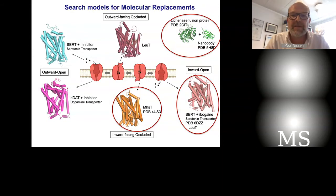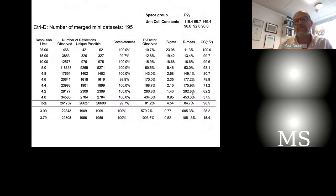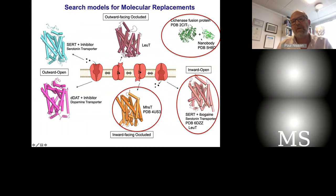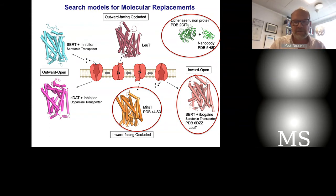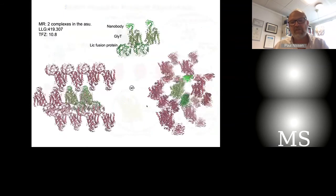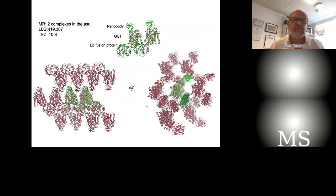Moving on from such a dataset at 4-ångström resolution, it seemed possible to start looking at molecular replacement solutions. For search models we had the fusion protein construct — the endolichenase fusion protein construct — as a model, and also for the nanobody. For the actual transporter, we managed to actually get hits with two structures: first with the inward-facing MHST structure, which apparently had the right conformation, and later when the inward-oriented serotonin transporter structure became available from the Guo lab. That managed us to build the asymmetric unit from these three different search models, showing a translation-related dimer of glycine transporter with fusion protein and nanobody in the asymmetric unit of the monoclinic crystal form.